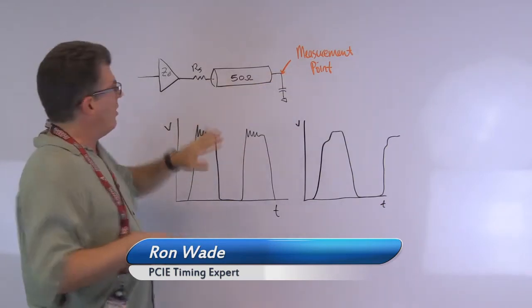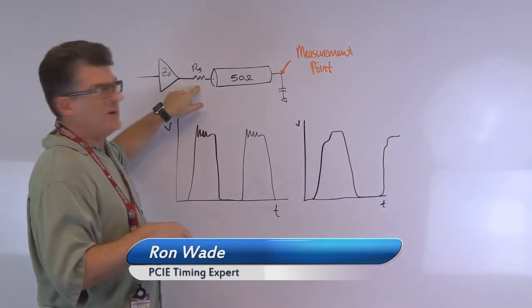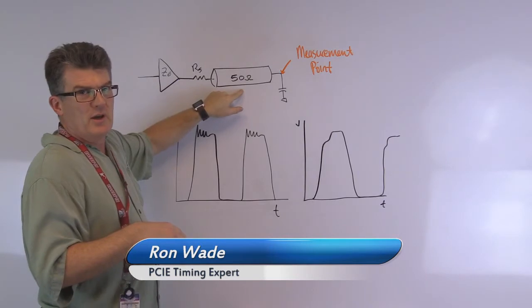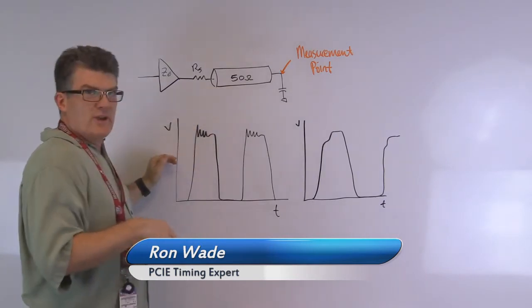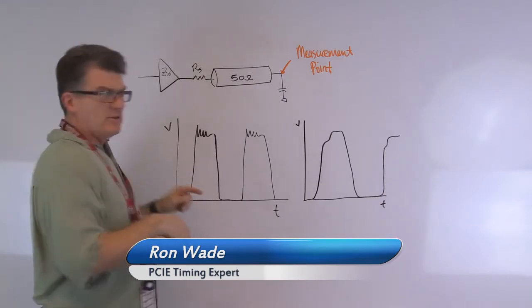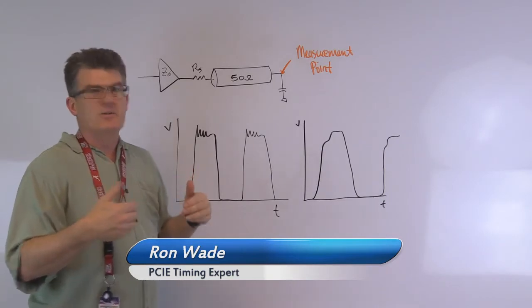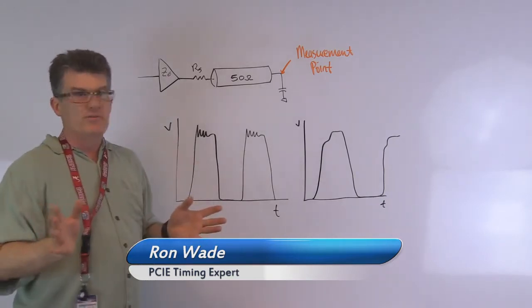So if you recall, the output impedance plus the series resistor value should equal 50 ohms. I'm drawing a single-ended waveform here and the important thing to note is that there's actually a pull up impedance for this guy and a pull down impedance, and they should be identical. When they're identical, you get the perfect waveform.